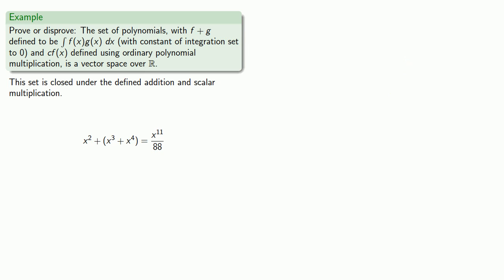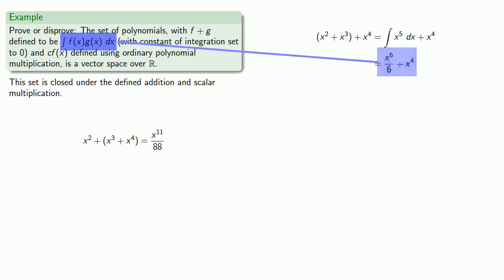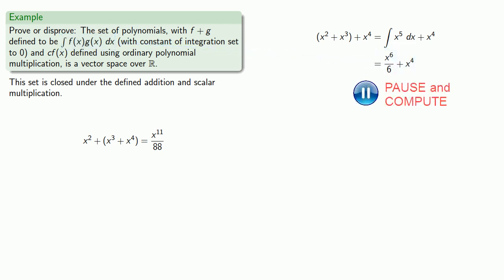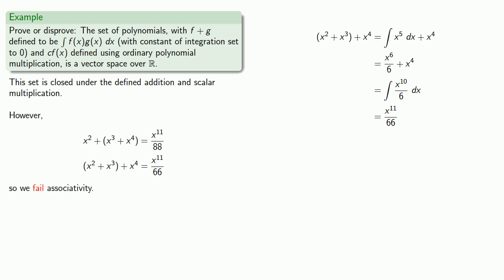Now compute (x² ⊕ x³) ⊕ x⁴. First, x² ⊕ x³ is the antiderivative of x² · x³ = x⁵, giving x⁶/6. Then (x⁶/6) ⊕ x⁴ is the antiderivative of x⁶/6 · x⁴ = x¹⁰/6, giving x¹¹/66. The two groupings give x¹¹/88 vs. x¹¹/66 — different results. We fail associativity, and our application for club vector space gets bounced. This is not a vector space.